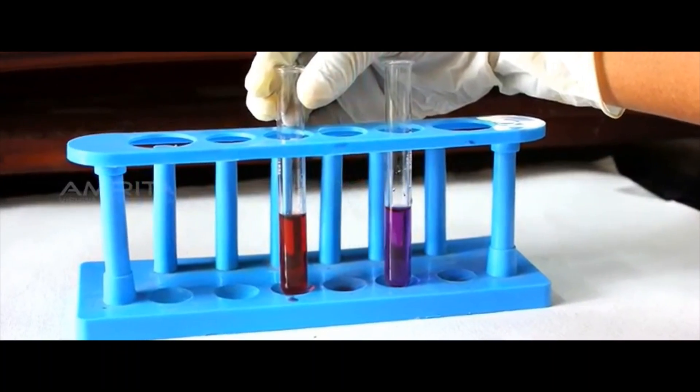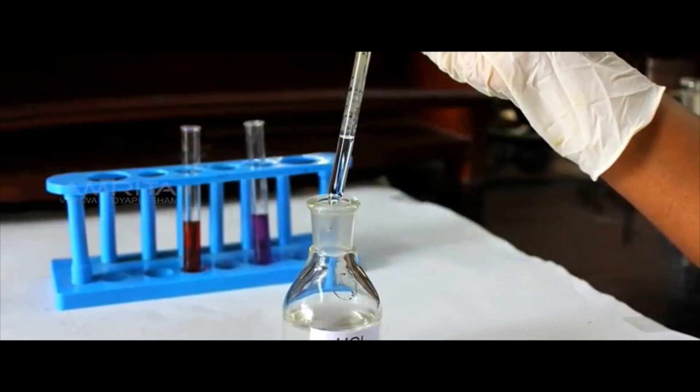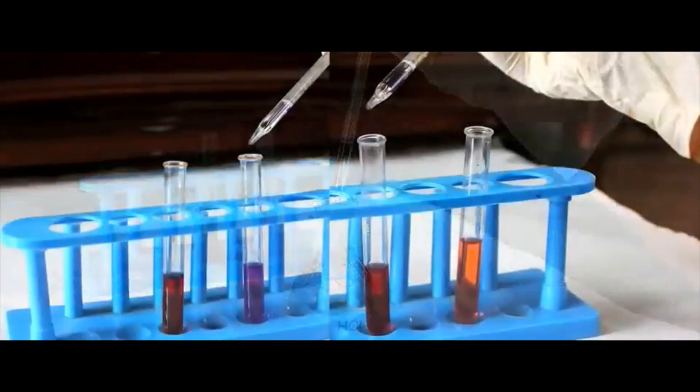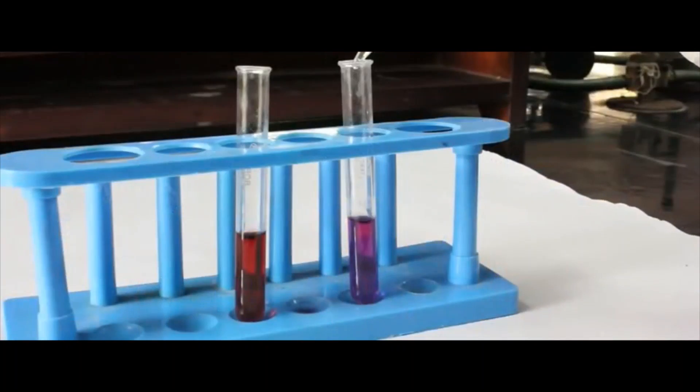Place both test tubes in the test tube stand and add a few drops of HCl in each test tube. You can see that the blue litmus solution changes to red.